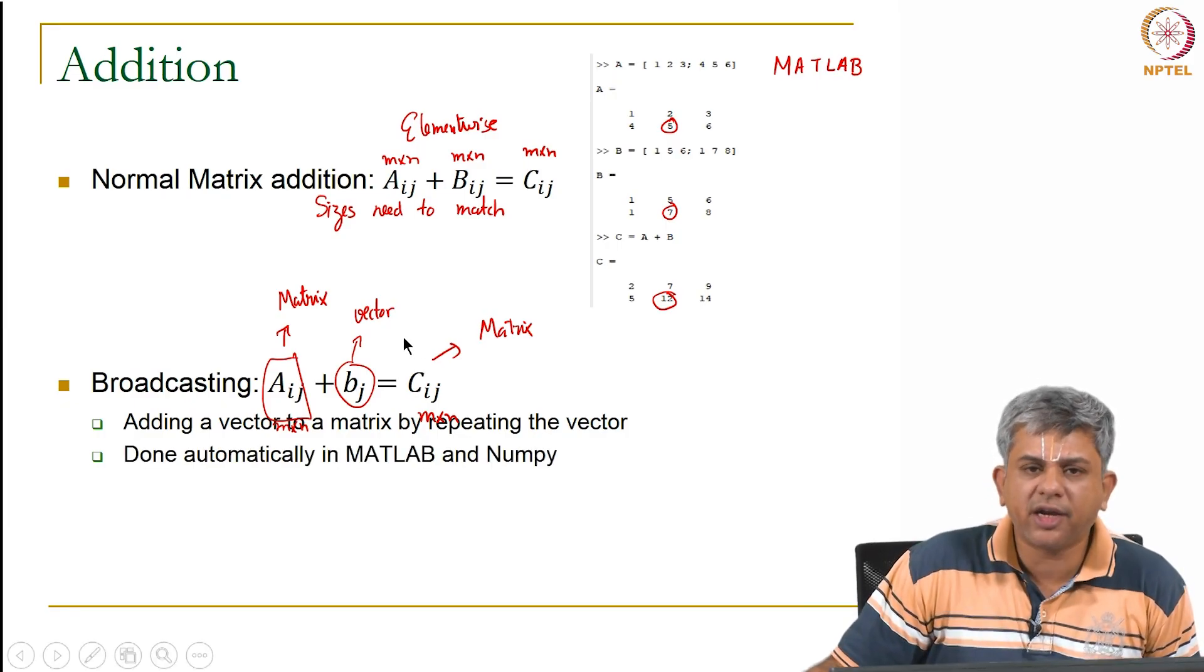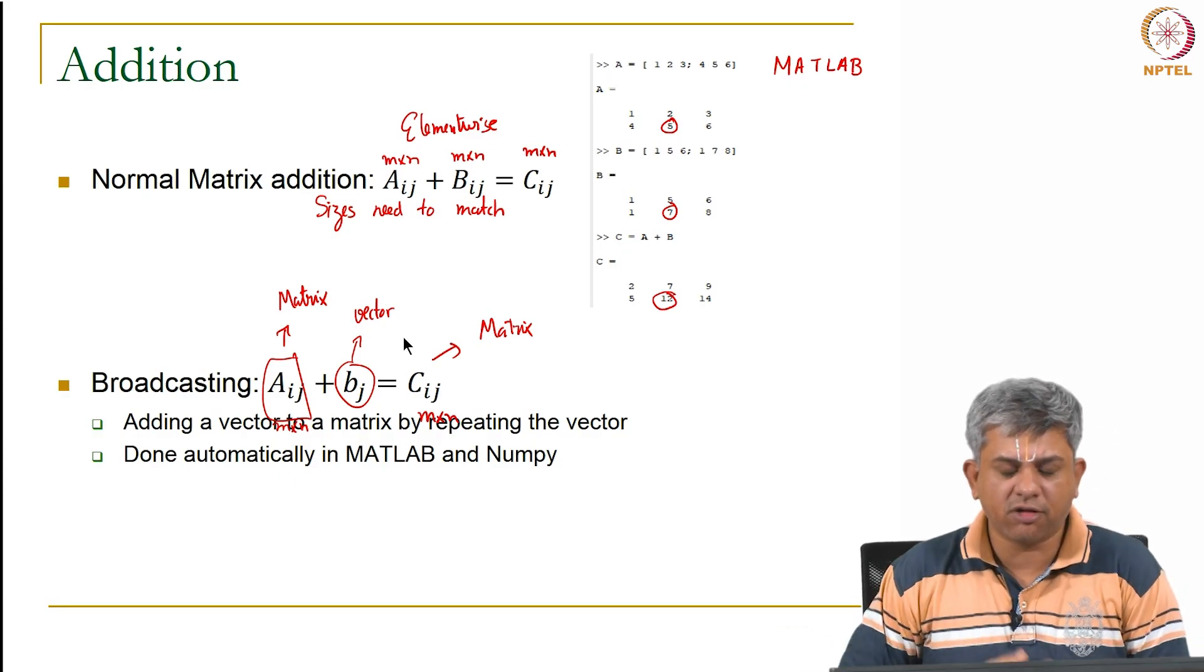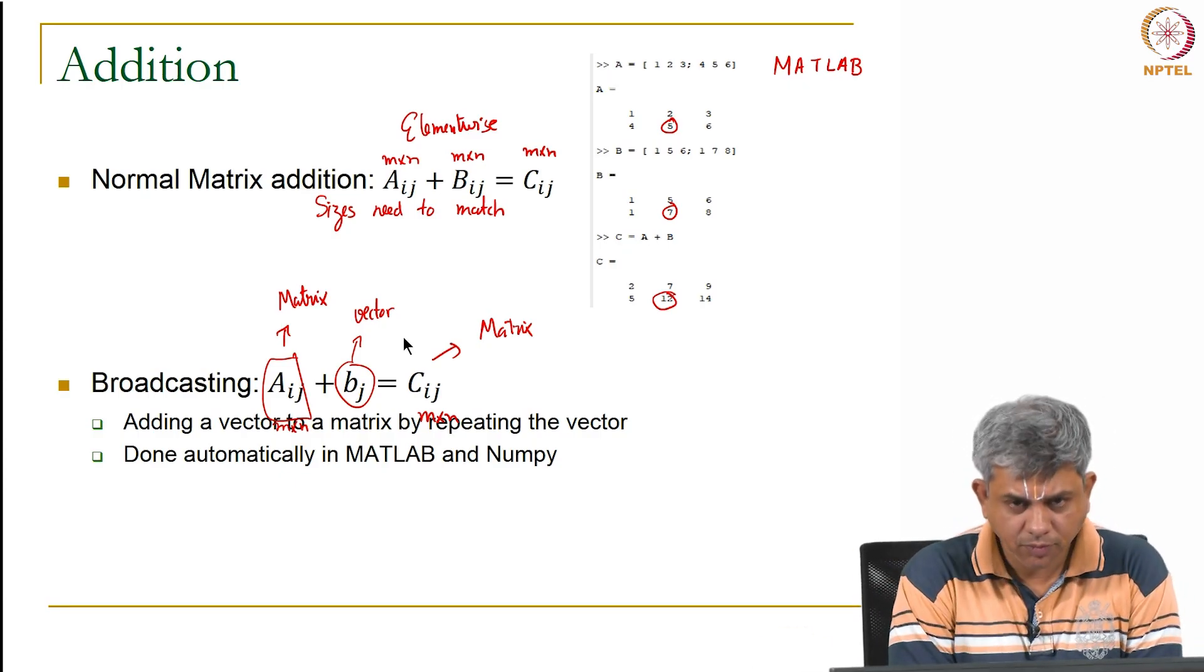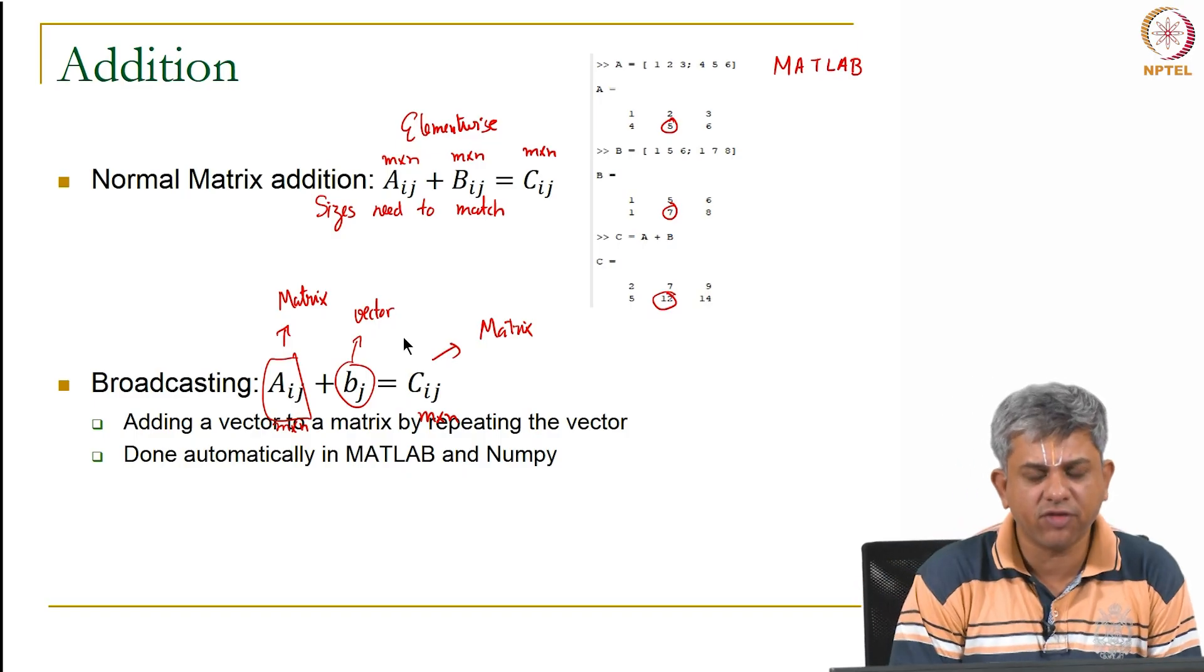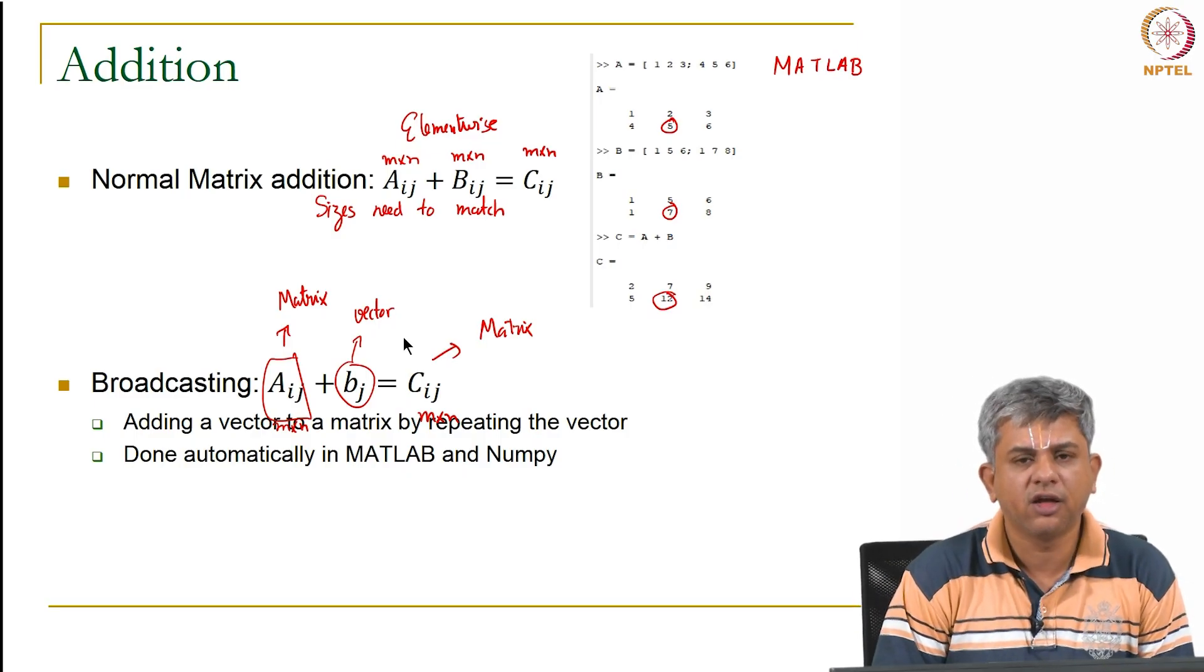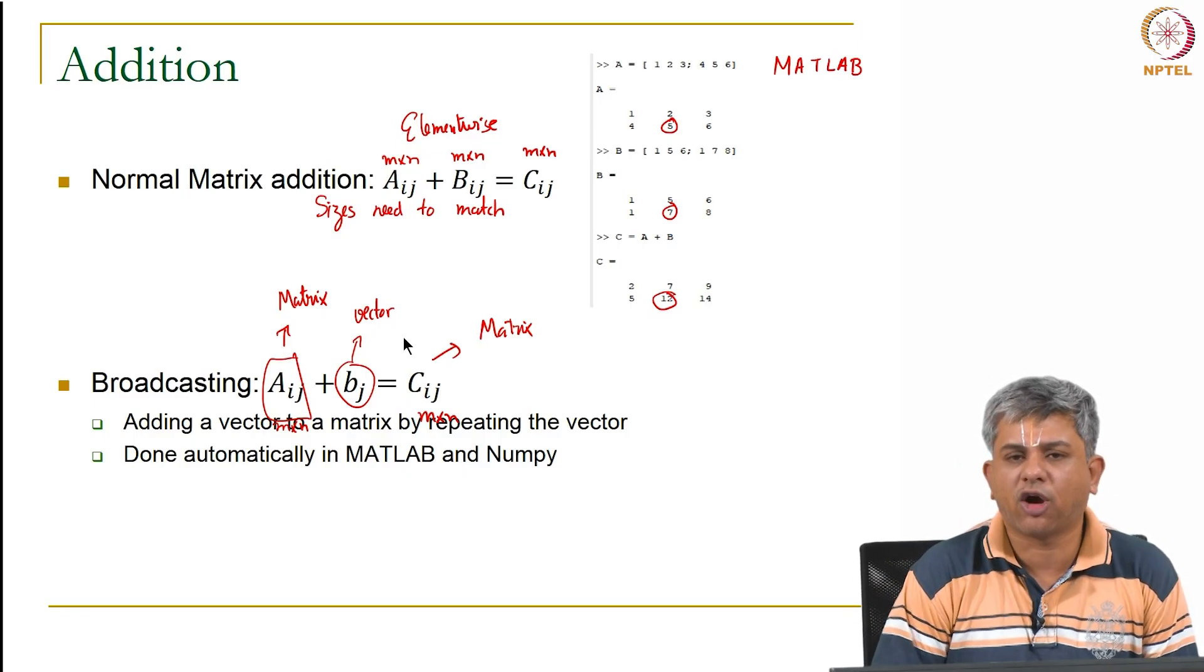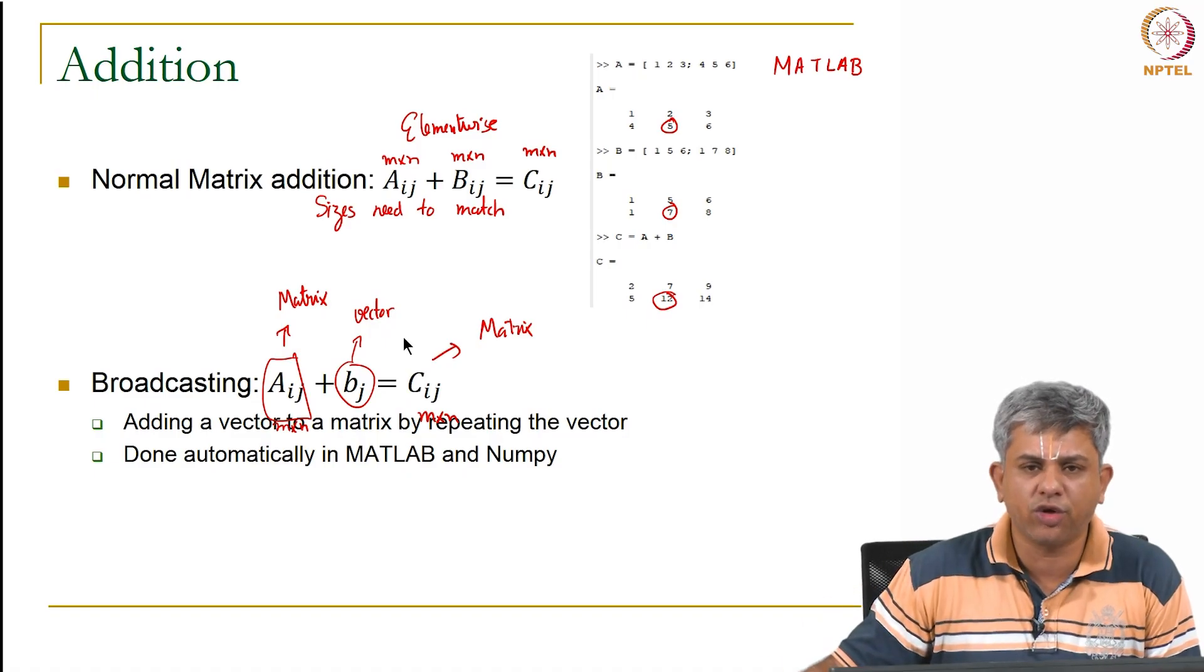Obviously it can be done only if the vector that we are choosing either has the same number of rows or the same number of columns. This is automatically done in MATLAB and Numpy especially in the recent versions of MATLAB. Numpy is a Python library which we will be looking at in the third week. So this is done automatically in both of these.